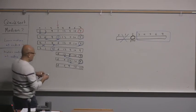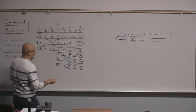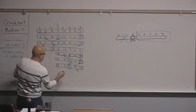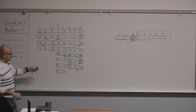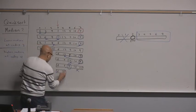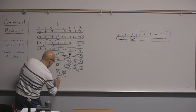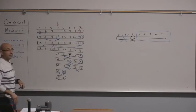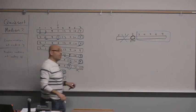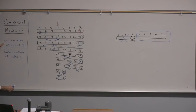Now the pivot 9 is at the middle position of this subarray. We eliminate the right subarray because we're looking for order 3, and we work with the left: 6 and 5. We know one of them is going to be the third element. We pick 5 as the pivot, swap it with 6, giving us: 5, 6. The pivot is now at position 3.